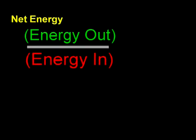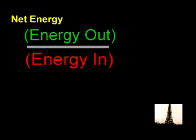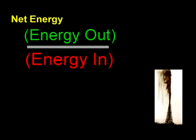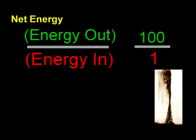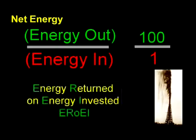We measure net energy by dividing the amount of energy we get by the amount of energy we had to use to get it — energy out over energy in. Energy in is the tax, while energy out is your take-home pay. If the total energy to drill an oil well was one barrel and 100 barrels were found, the net energy return is 100 to 1, meaning we paid a tax of just 1%. Another phrase for this is energy returned on energy invested, or EROEI. We'll stick with energy out divided by energy in, as it's easier to visualize.